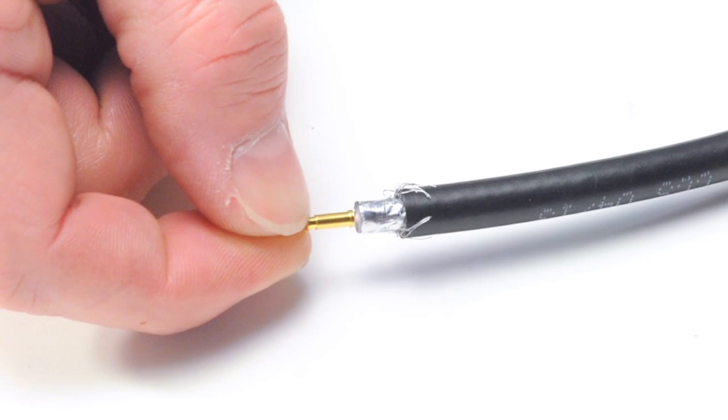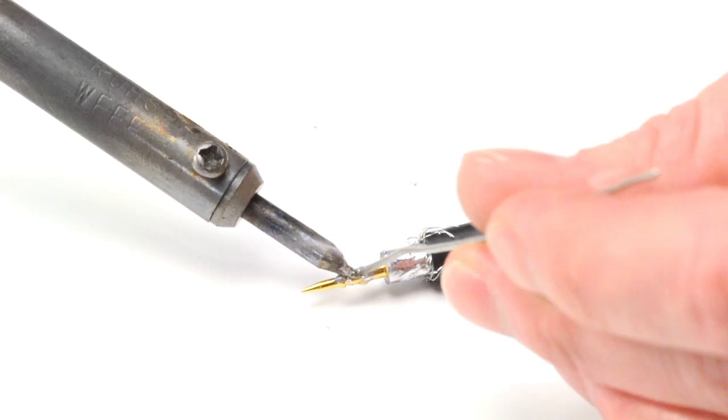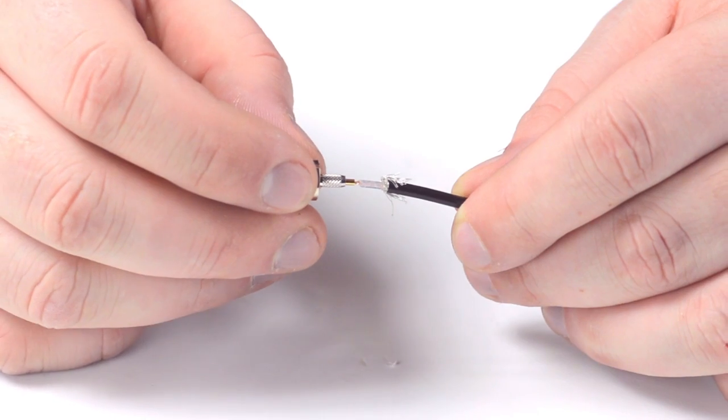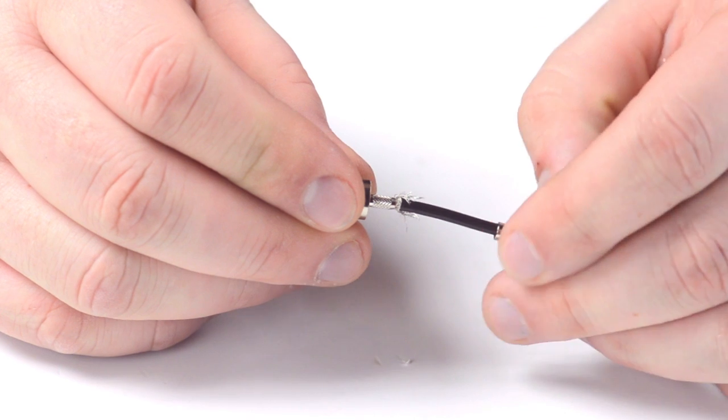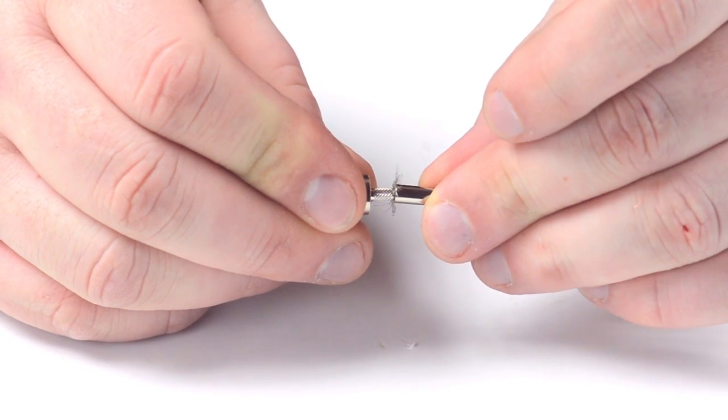Pull back the braided shield and insert the pin onto the center conductor. Solder the pin onto the center conductor and insert the connector housing over the cable. Then slide up the ferrule to the base of the connector, folding the shield with it.